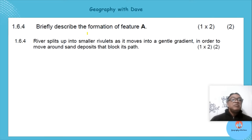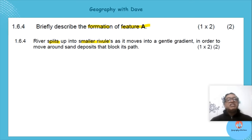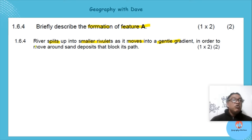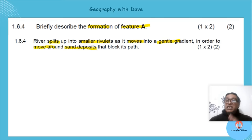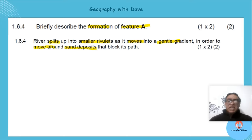'Briefly describe the formation of feature A.' The river splits up into smaller rivulets as it moves to a gentle gradient. It moves around sand deposits that block its path, so the river moves around them creating those little rivulets or channels — and that explains your distributaries.